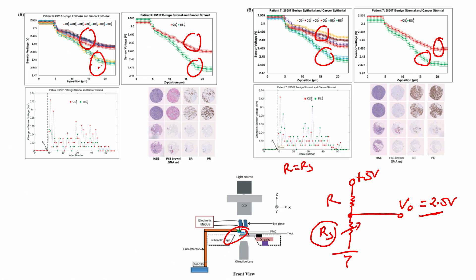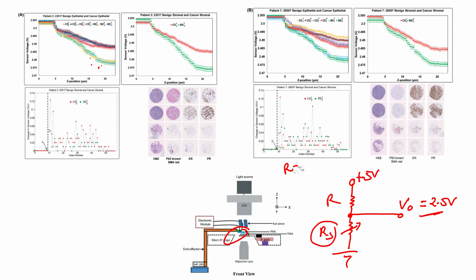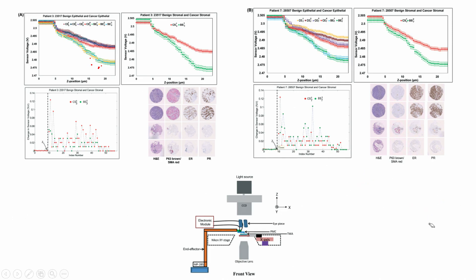So when I indent the tissue, I can clearly delineate the elasticity based on the plot and data obtained. There is a change in sensor voltage as you keep indenting. These are the IHC studies — immuno-histochemistry — showing HNE, P63, Brown, SMA, estrogen, and prostrogen markers. Moving forward, once we know that the piezo-resistive micro cantilever can help us understand tissue elasticity, we want to understand the electrical properties of tissue.